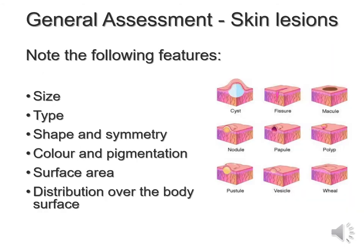When we look at the general assessment for skin lesions, as with your physical assessment during inspection and palpation, you note the following features: the size of the lesion, the type of lesion, the shape and symmetry, the colour and pigmentation. You look at the surface area — how much area does it cover — and you look at the distribution over the body surface.